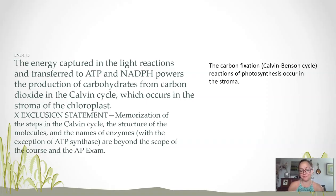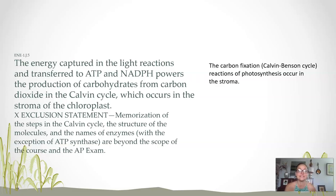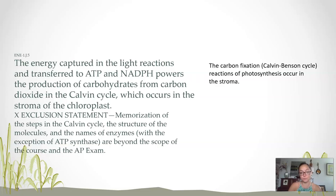If you're in AP Bio right now, the curriculum or the course framework mentions this only once, where it says the energy captured in light reactions and transferred to ATP and NADPH powers the production of carbohydrates from carbon dioxide in the Calvin cycle, which occurs in the stroma of the chloroplast.